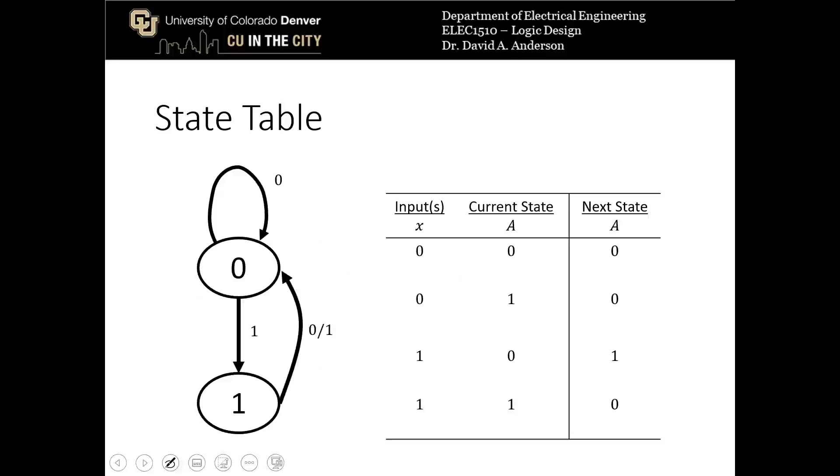Alright, so for the very simple state diagram that I showed at the beginning of the lecture with the two states and the single input, when the current state which I've assigned a variable to A is a 0, that's here, and the input, which I'll call x, is also a 0, which corresponds to this arrow, the next state is a 0, so that's again A. A is the current and the next state, A represents the state.